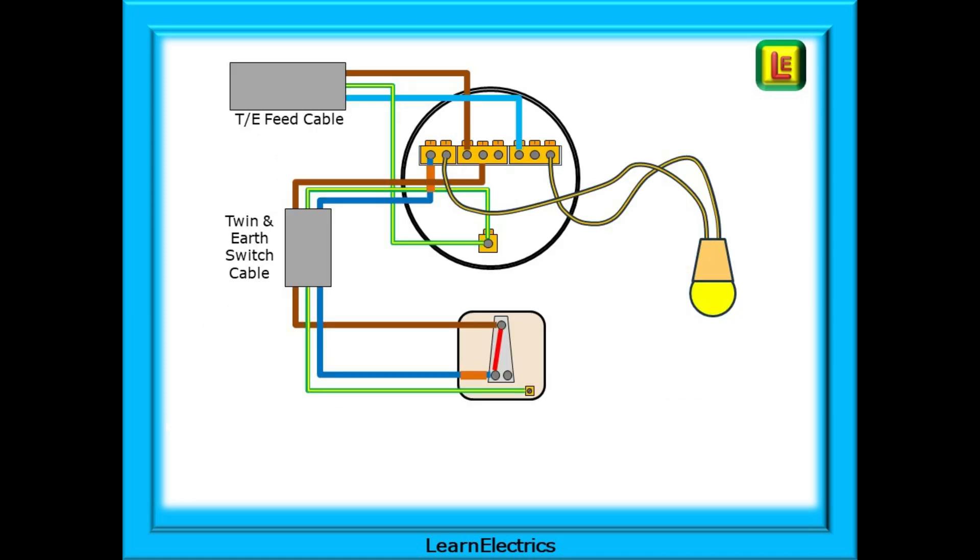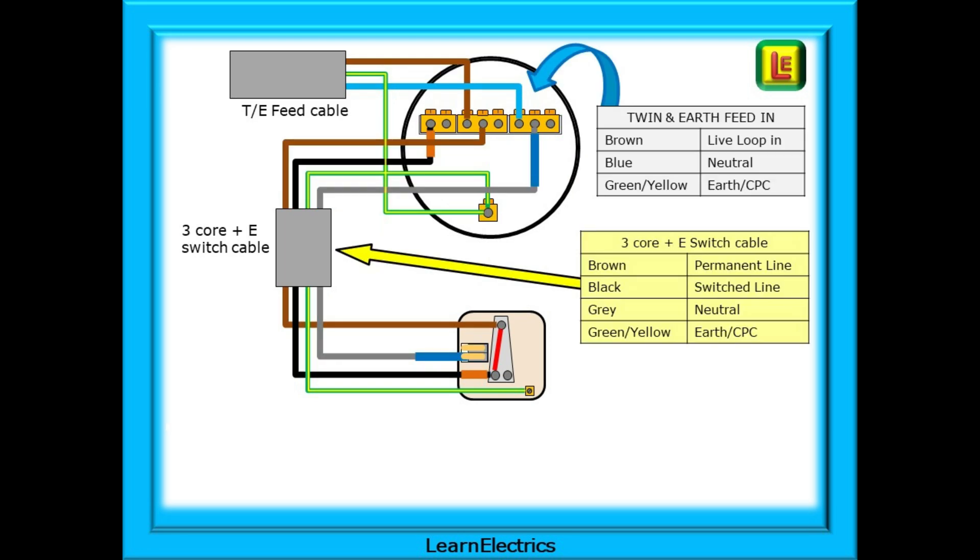This is our lighting circuit wired to the current three plate specifications, shown here as a single lamp and a single switch. This is the same circuit with three core plus earth used as a switch cable and the two tables show the colour codes for the different cables in use.